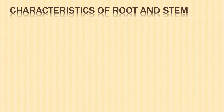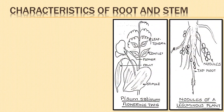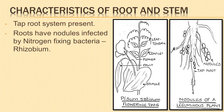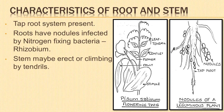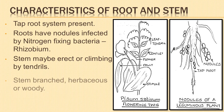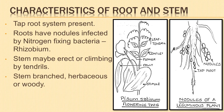The plants have a tap root system. The roots possess small swellings called nodules or tubercles, which are infected by nitrogen-fixing bacteria, namely Rhizobia. The stem may be erect, twining, or climbing by means of tendrils. They may be branched, herbaceous, or woody.